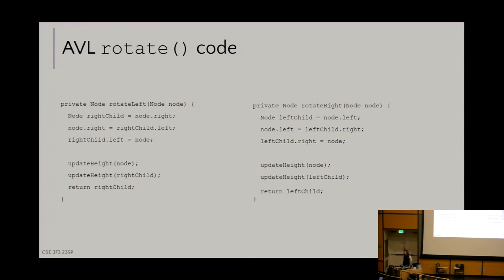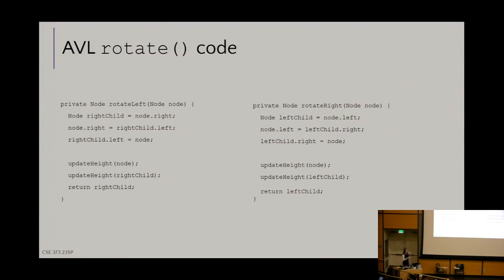We will not ask you to implement this code. CSE 332 will make you do it — enjoy. AVLs are notoriously a pain to maintain and implement. Java does have an AVL-based implementation underlying some of its data structures, but I believe even TreeMap in Java doesn't use AVLs, because even the makers of Java were like: we don't want to do that.